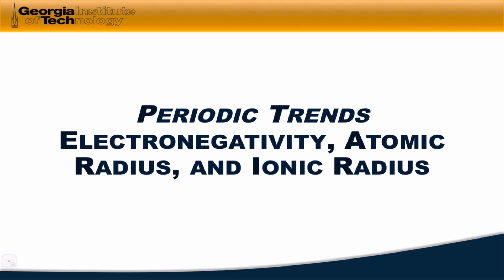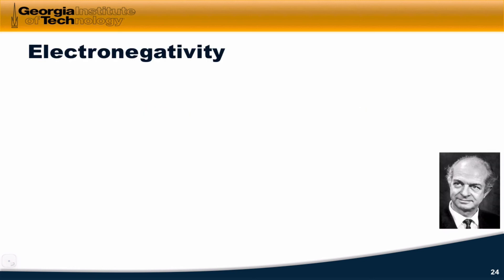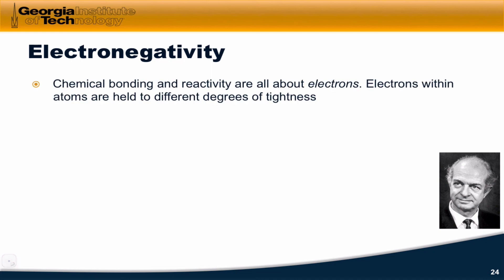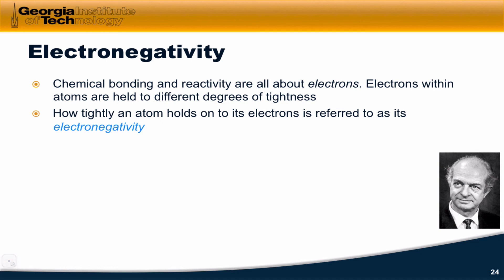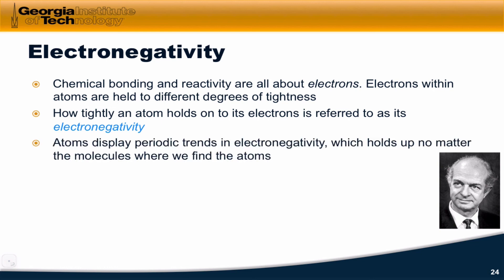The properties we're going to focus on in this video are electronegativity, atomic radius, and ionic radius. Let's begin with electronegativity. A big idea in chemistry — a huge idea — is that chemical bonding and reactivity are all about electrons. Electrons within atoms are held to different degrees of tightness. How tightly an atom holds on to its electrons is referred to as its electronegativity. Linus Pauling defined electronegativity as the tendency of an atom to attract electrons to itself. Atoms display periodic trends in electronegativity.